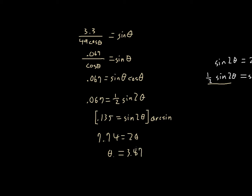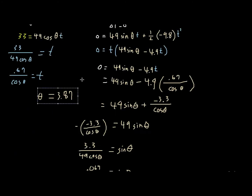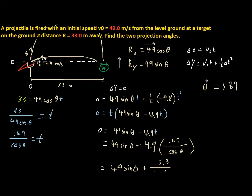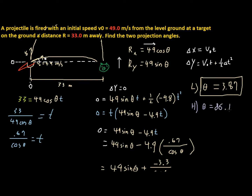You will have a different number because your numbers are different. So we have our theta right here — 3.87 degrees. But we're not done yet, because this is our lower angle. In order to calculate the higher angle, the simplest way is to subtract this from 90. So the higher angle is 90 minus 3.87, which equals 86.13 degrees.